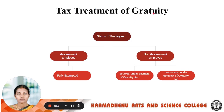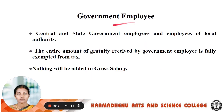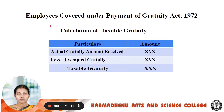Next we see the tax treatment of Gratuity. Based on the employee status, the employee will be classified into two categories. One is a Government Employee, another one is a Non-Government Employee. The Government Employee means the amount received as Gratuity is fully exempted. The Government Employee means the employee who worked in Central or State Government or Local Authority. The entire amount of Gratuity received by such an employee is fully exempted from taxes — that is, nothing will be added to the gross salary.